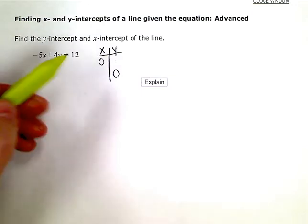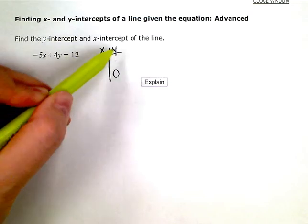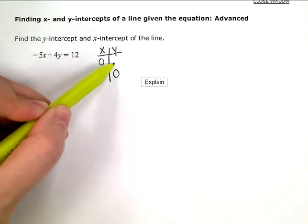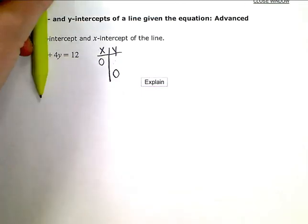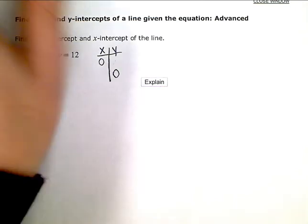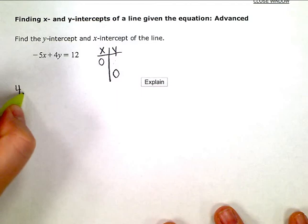To find the y-intercept, we'll do this one first since I listed it first. I'm going to zero out or basically ignore the x term in my equation. And I'm left with 4y equals 12. So, I have 4y equals 12.